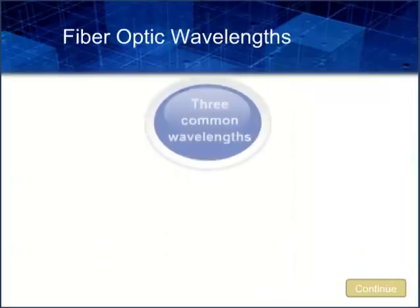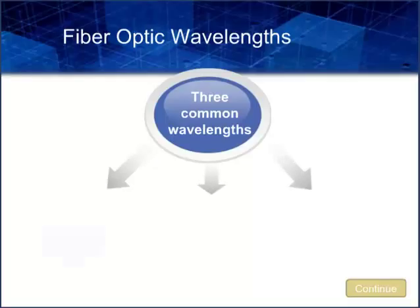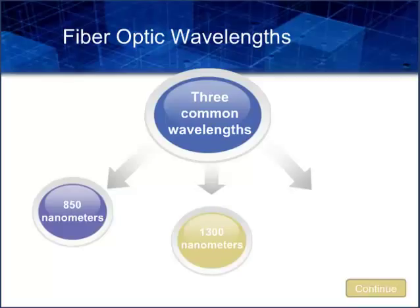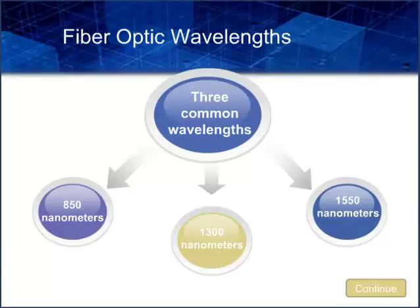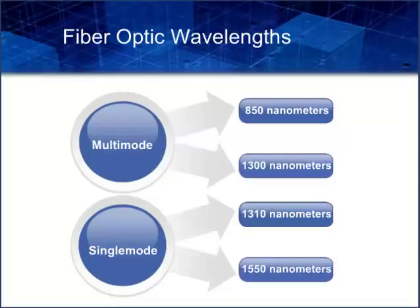In fiber optic wavelengths, there are three common wavelengths: 850 nanometers, 1,300 nanometers, and 1,550 nanometers. Multi-mode fiber optic wavelengths are typically tested at 850 and 1,300 nanometers, and single-mode fiber optic wavelengths are tested at 1,310 and 1,550 nanometers. Multi-mode fiber optic systems are typically operated at 850 and 1,300 nanometer wavelengths, and single-mode systems at 1,310 and 1,550 nanometer wavelengths.